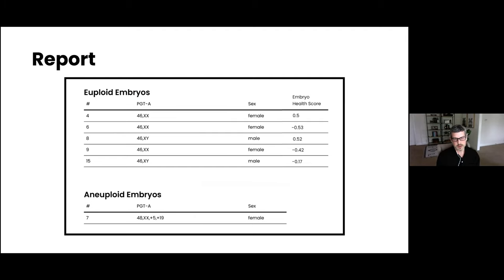And then from there, the provider would receive a report that includes, obviously, aneuploidy testing. So you can have a conventional conversation. For example, here, the patient has five euploid embryos and one aneuploid embryo. They also have embryo health scores. If they have any questions, they can reach out to Genomic Prediction for any follow-up.